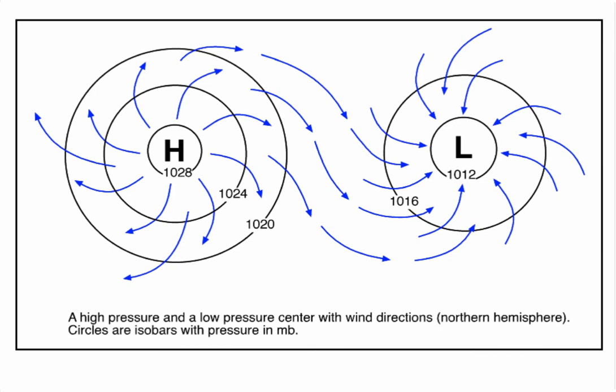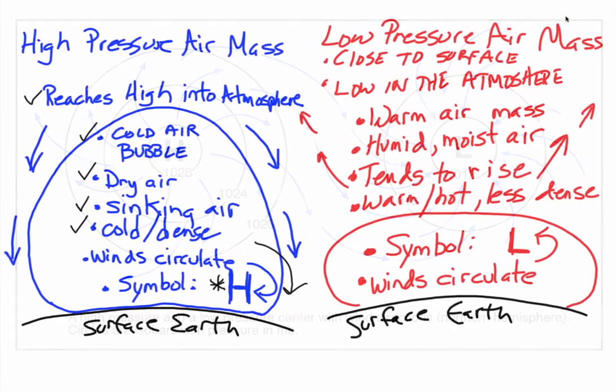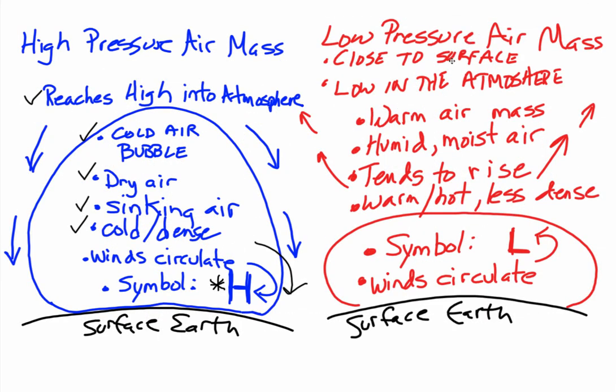This is important because it's the opposite of what happens around a low-pressure system. The important characteristics of low-pressure systems and low-pressure air masses: these are warm air masses. They're lower in the atmosphere. They don't extend high up into the atmosphere like a high-pressure system does.